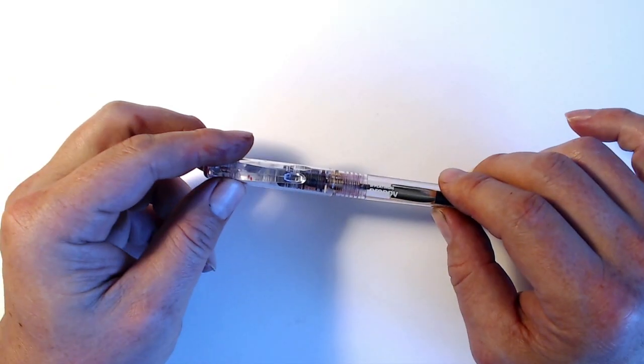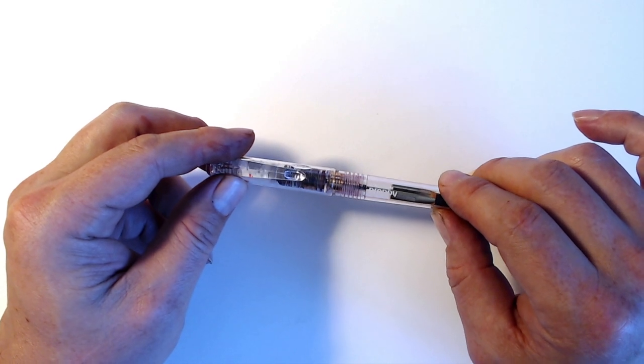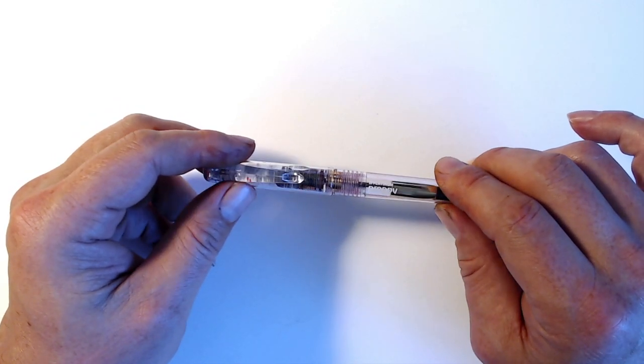As I already stated, the main reason to eyedropper pens is ink capacity. Self-filling pens have mechanisms that fill up a large part of the barrel, which limits the amount of ink a pen can hold.